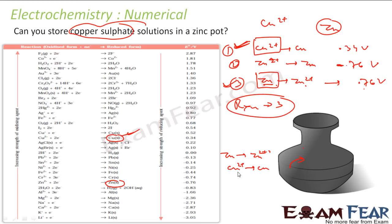So we cannot use zinc pot to store copper sulfate solution. But if the question is: can you store zinc sulfate in a copper pot? The answer will be yes. Why? Because then we have zinc sulfate and we have copper. So if you compare these reactions now, I have zinc sulfate in copper, then you will see that is not feasible because copper will not be able to displace zinc sulfate from its solution. Copper is weaker but zinc can displace copper from its salt, but copper cannot displace zinc from its salt.